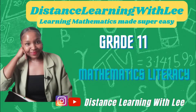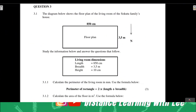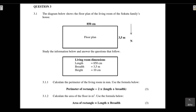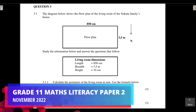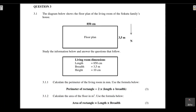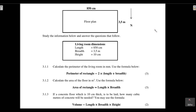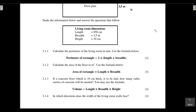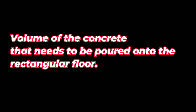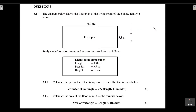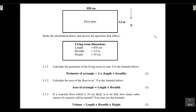Welcome to Distance Learning with Lee, where I make learning mathematics super easy. In today's video tutorial, we are going through the Grade 11 Mathematical Literacy Paper 2 from November 2022, tackling Question 3.1, which deals with measurements. We'll be calculating the perimeter of a rectangle, the area, the volume, and doing conversions from centimeters to meters.